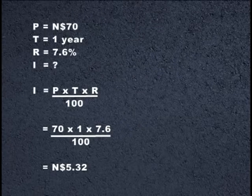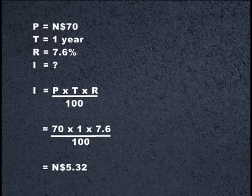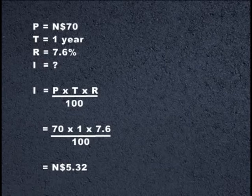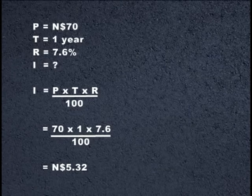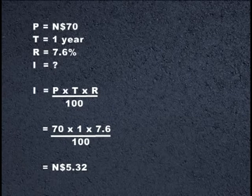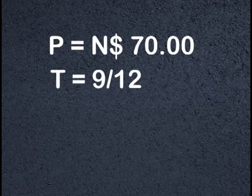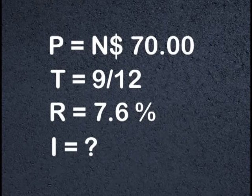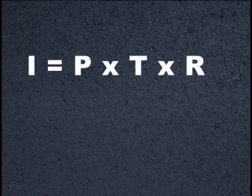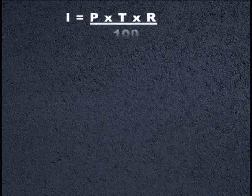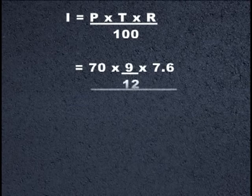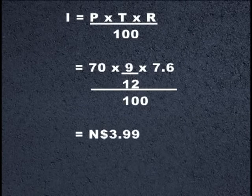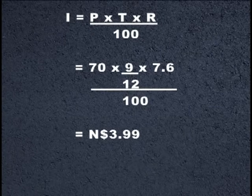Okay, but what if I only want to save the money for 9 months and not for the whole year? Then you do the same calculation, but for the time you use the number of months divided by 12, that is 9 divided by 12. The amount being saved is $70 Namibian dollars for 9 months at 7.6% interest. So: $70 × (9/12) × 7.6 ÷ 100, which gives you $3.99 Namibian dollars interest for 9 months.